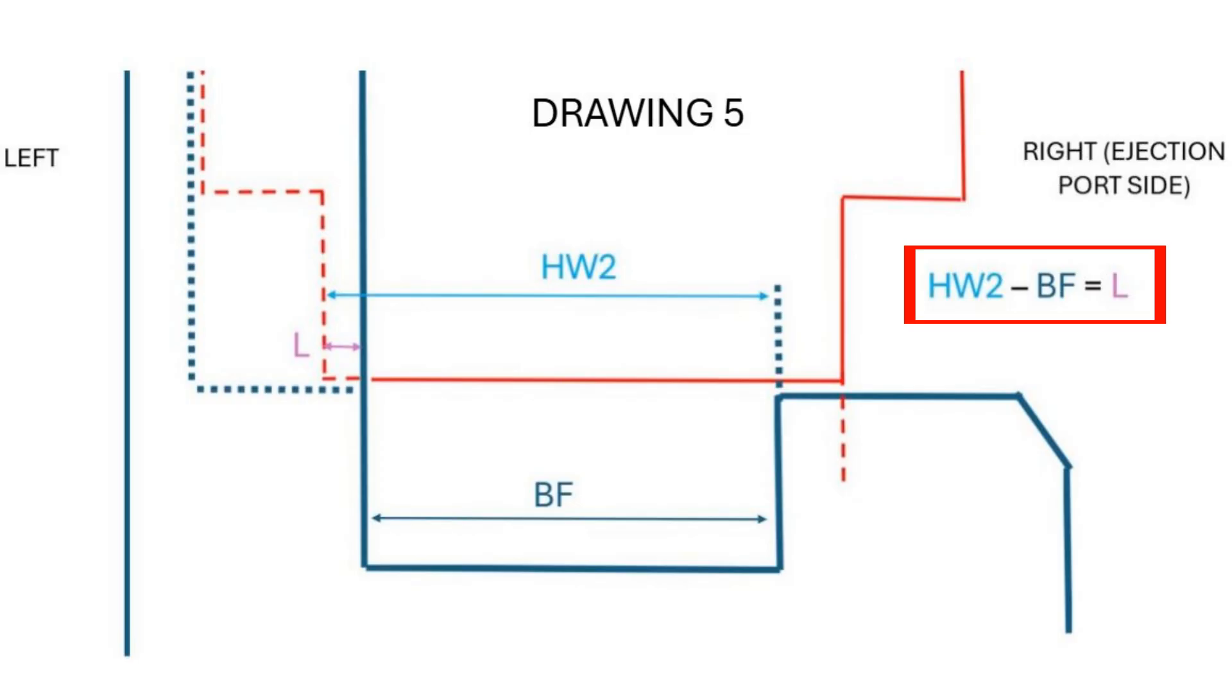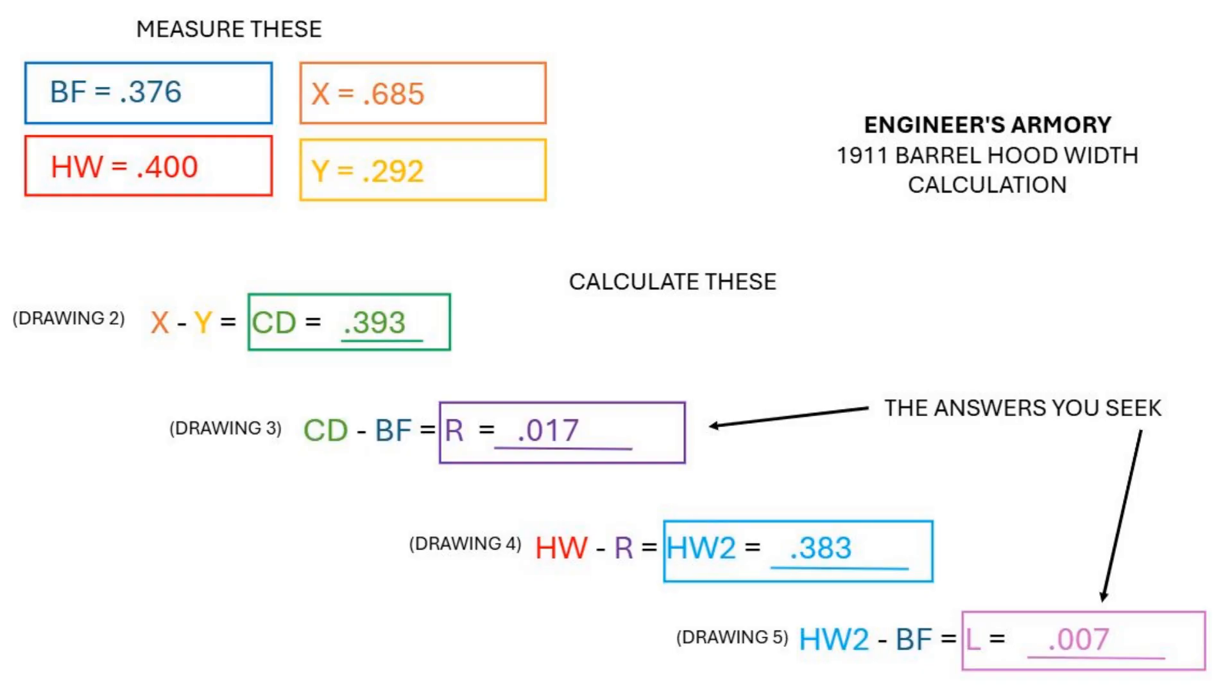Now subtract BF from HW2. This is the remaining material that comes off the left side of the hood to match the breach face width. I will call this L. In my case L is seven thousandths of an inch. So seven thousandths needs to come off the left side of the hood and 17 thousandths needs to come off the right side of the hood.